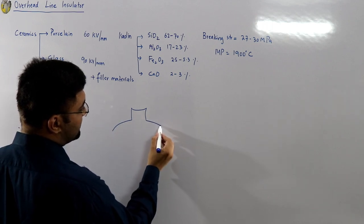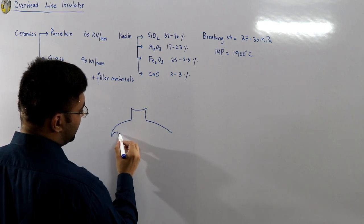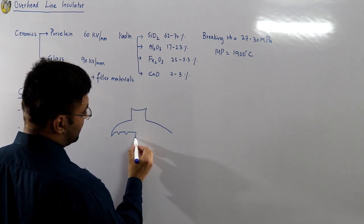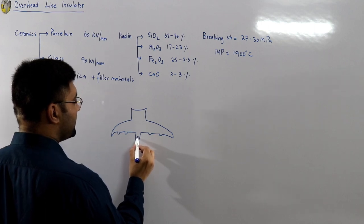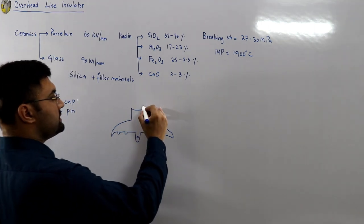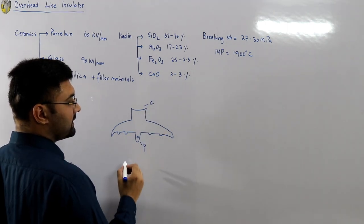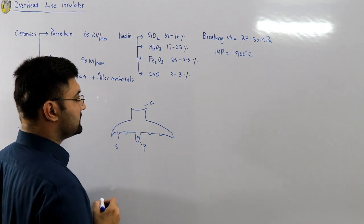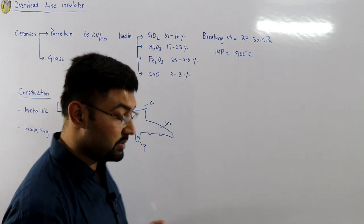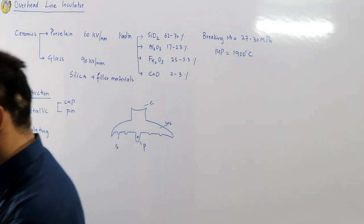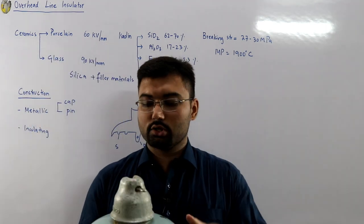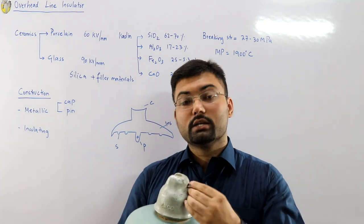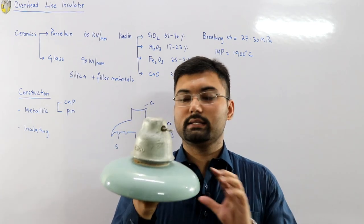So if this is your cap, this is your insulating material, and this is your pin. This is the cap, this one is the pin, and these are the sheds, while this is the insulating material sandwiched in between them. This is the disc type insulator — a suspension type suspended from the tower.